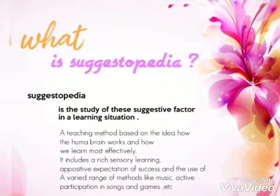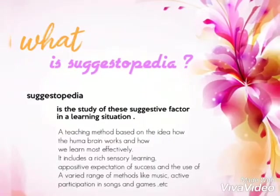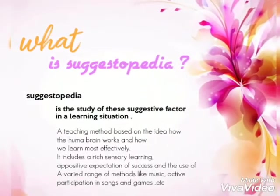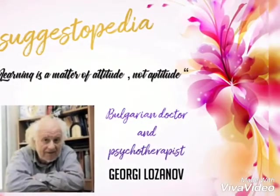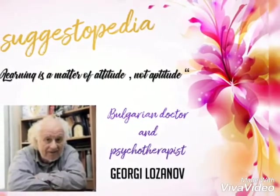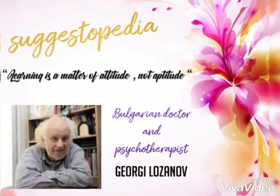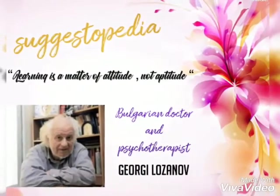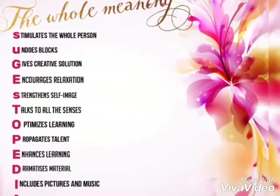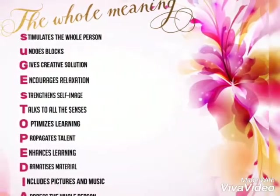The meaning of Suggestopedia is the study of suggestive factors in a learning situation. The key characteristic of Suggestopedia is its founder, Georgi Lazanov, and he said learning is a matter of attitude, not aptitude. This picture also shows the whole meaning of the word Suggestopedia.